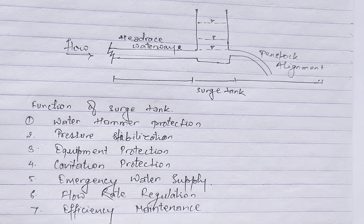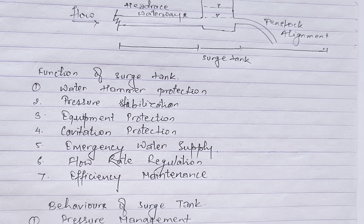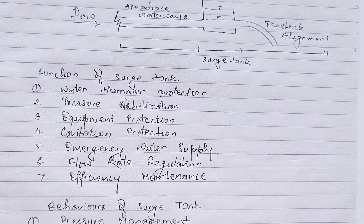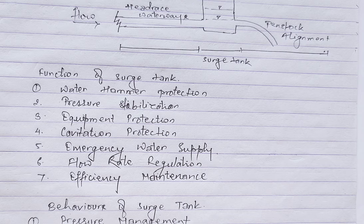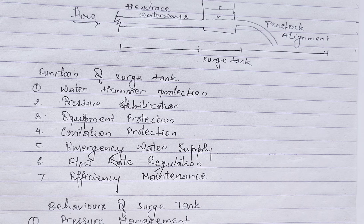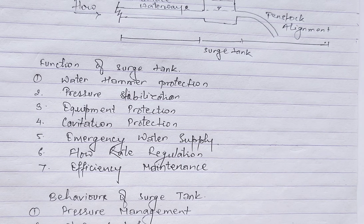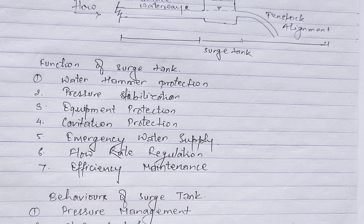Now let's talk about the behavior of the source tank. The behavior of a source tank is characterized by its response to changes in fluid flow within a system. The first key behavior is pressure management: the source tank absorbs excess pressure preventing water hammer, and releases stored fluid to stabilize pressure levels.